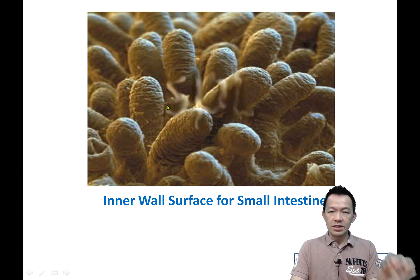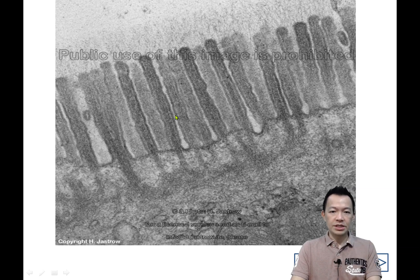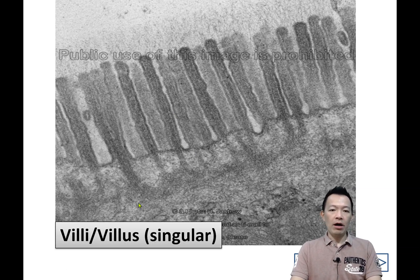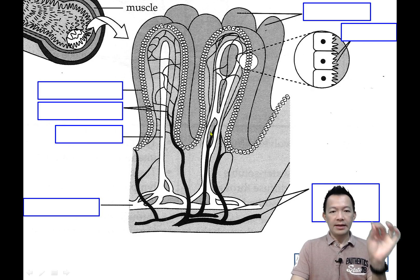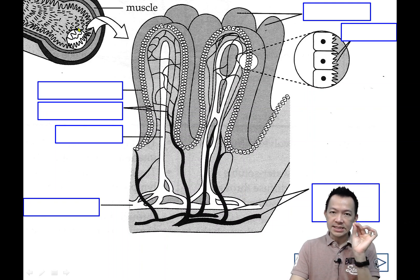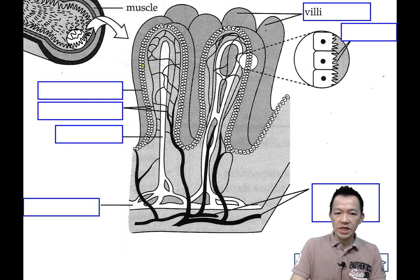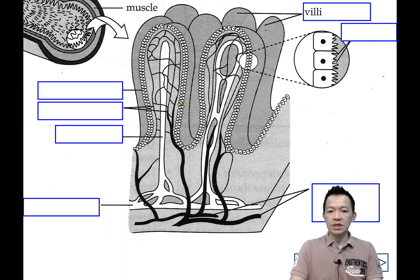So under the microscope, the inner surface of the small intestine actually looks like this — the shape of the small intestine. All of these we call villi. If you cut the small intestine, on the inner surface of the small intestine it contains a lot of villi. This is one of the villi, which is called a villus.